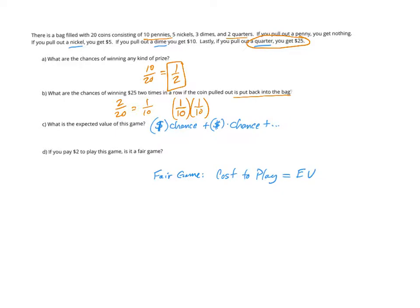Next, what is the expected value of the game? The expected value of a game is always found by doing the money you can win. In this case I can win $5, which has five nickels out of the 20, or one-fourth of the bag is nickels.